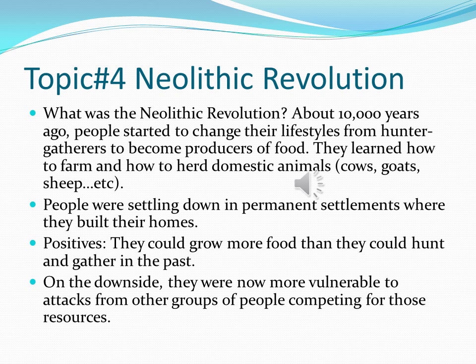Welcome back, kids. We are ready for our next topic: the Neolithic Revolution, a very important topic for your global Regents. About 10,000 years ago, people started to change their lifestyles — from hunter-gatherers to become more producers of food. They learned how to farm and how to herd domestic animals such as cows, goats, and sheep. People settled down in permanent settlements where they built their homes and villages. The positive was that they could now grow more food than they could hunt and gather, but on the downside they were more vulnerable to attacks from other groups competing for those resources.